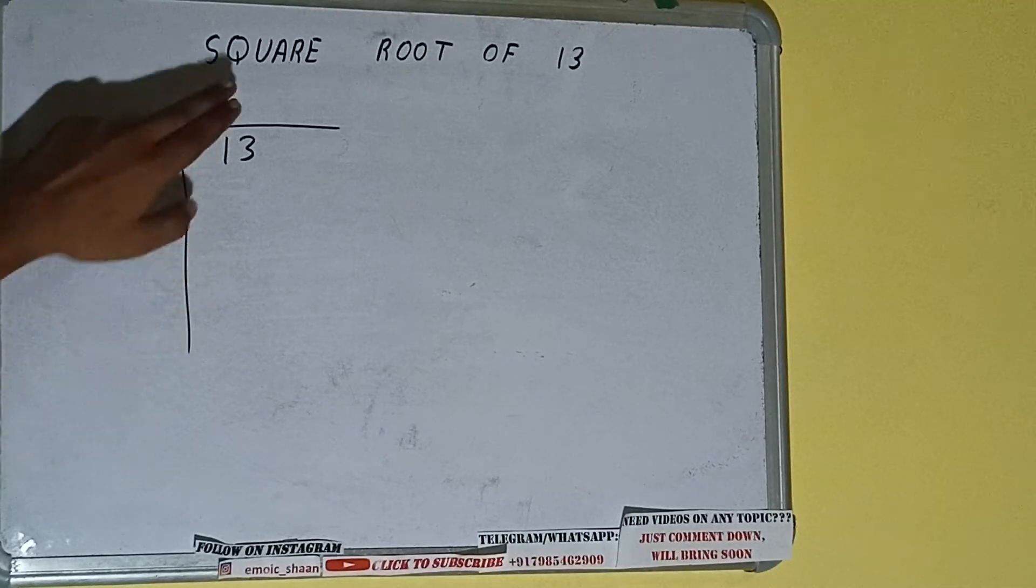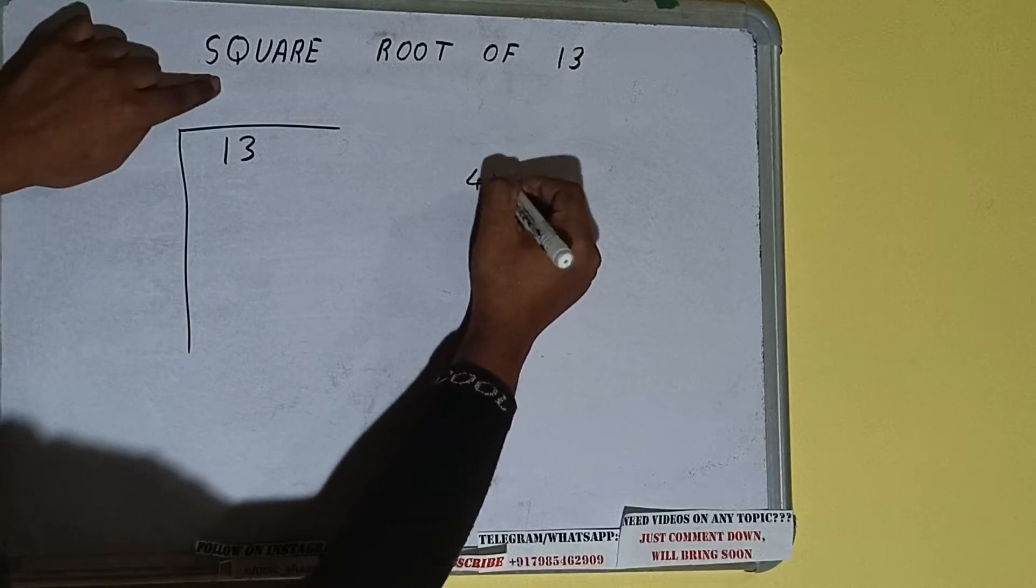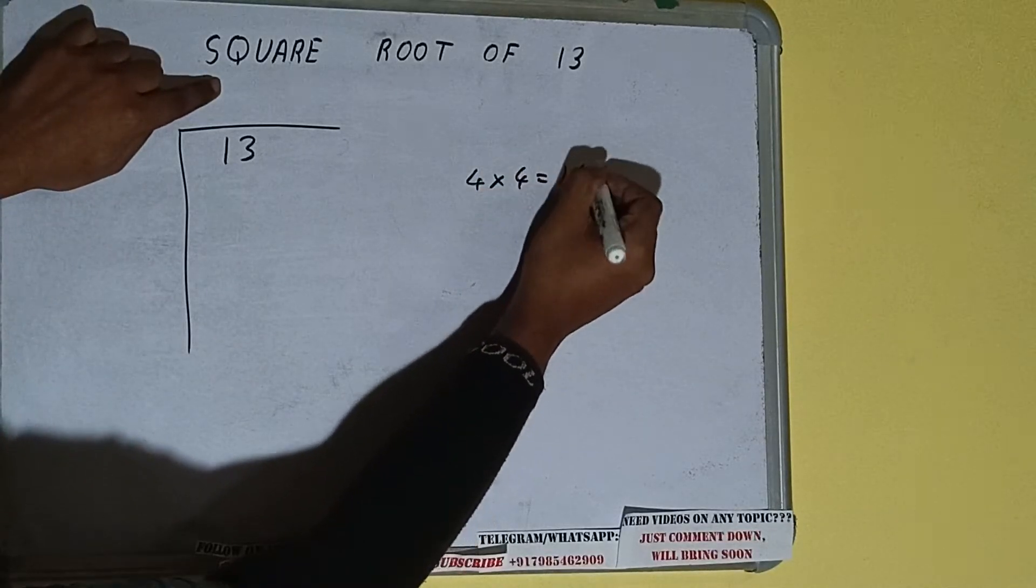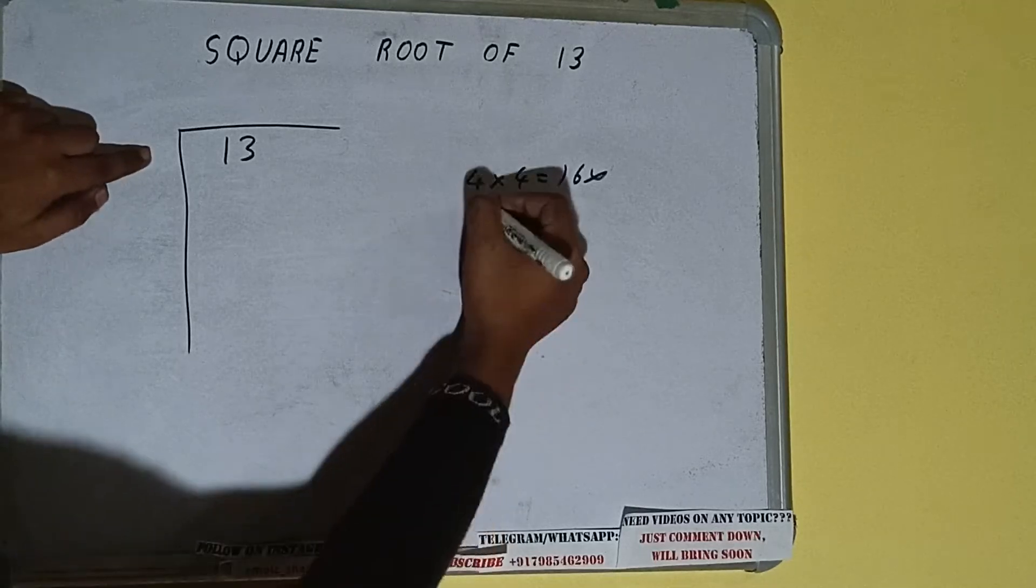about is whatever number we write here, we have to write here also. So if we write 4 here and 4 here, it will be 16, which is greater than 13, so we cannot take it. If we write 3 here and 3 here, it will be 9, which is good to take.